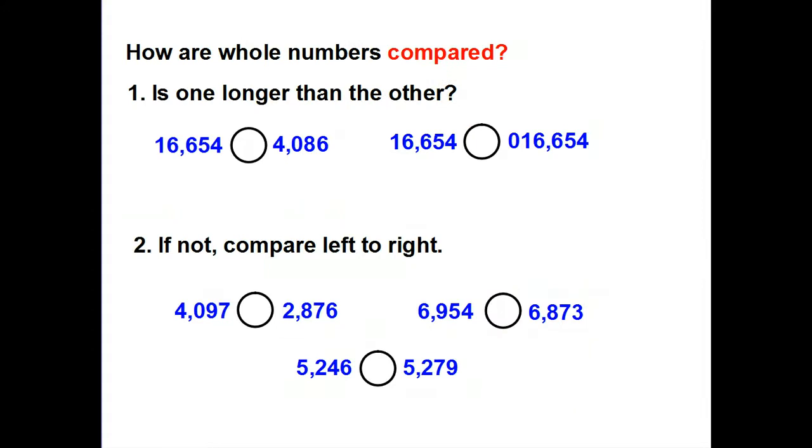How are whole numbers compared? Well, the first thing a person wants to look at is, is one longer than the other? Because when you're dealing with whole numbers, it really is how you know. Right here, we've got 16,654 and 4,086. So obviously, that one's longer. Now take a look here because I'm cheating. This one is longer, but because I put a zero in front, it's not really longer. Remember, zeros in front of a whole number don't change the value. These two are actually equal.